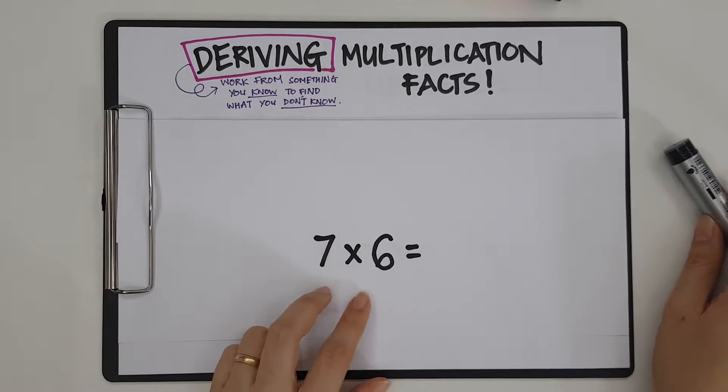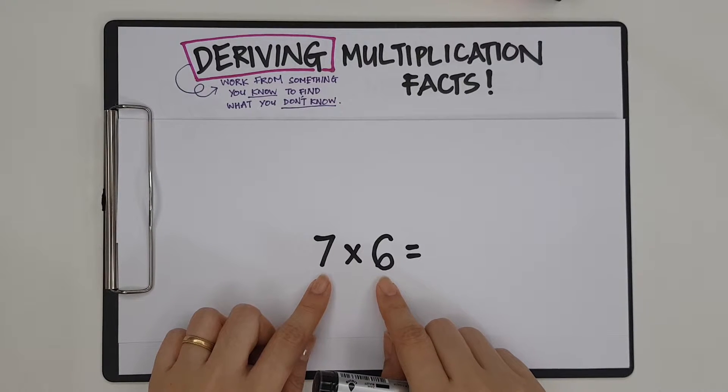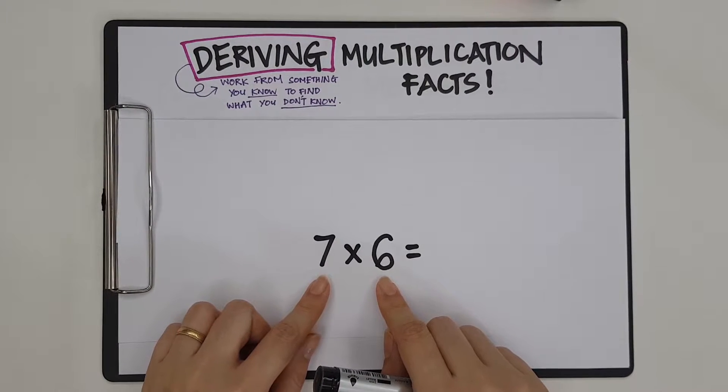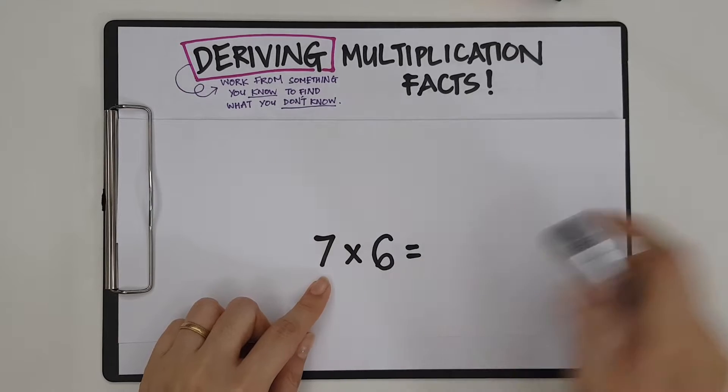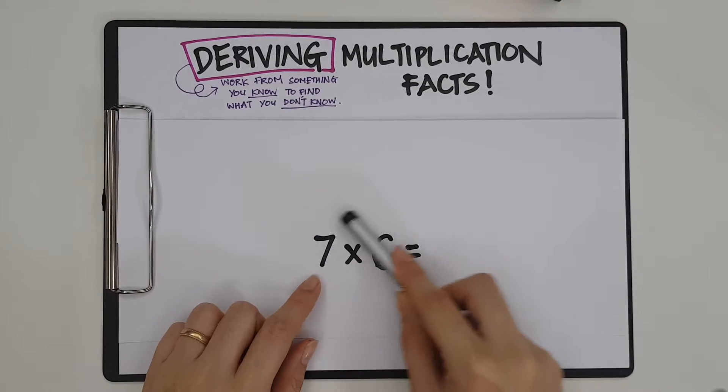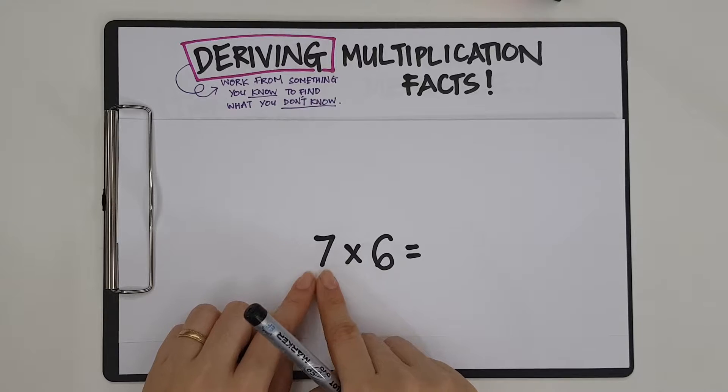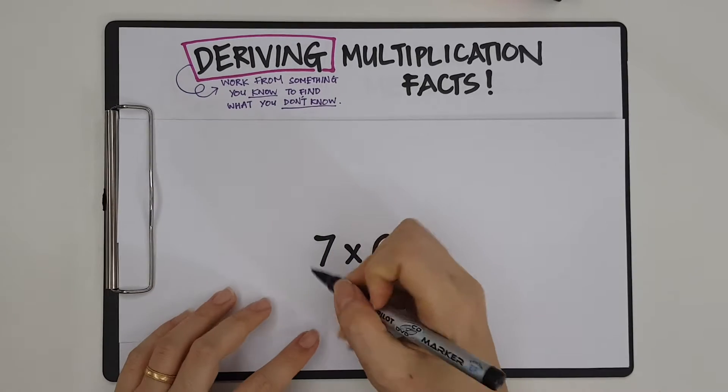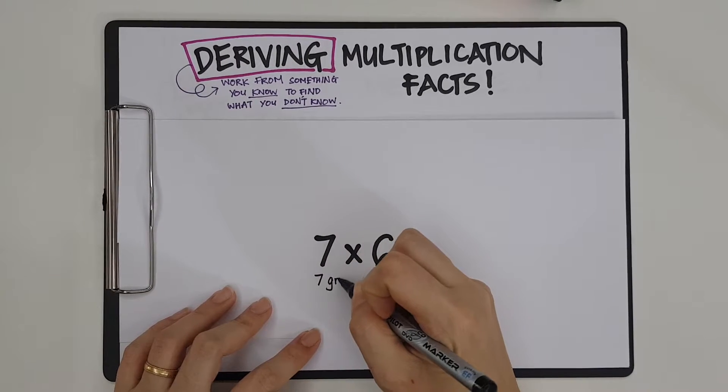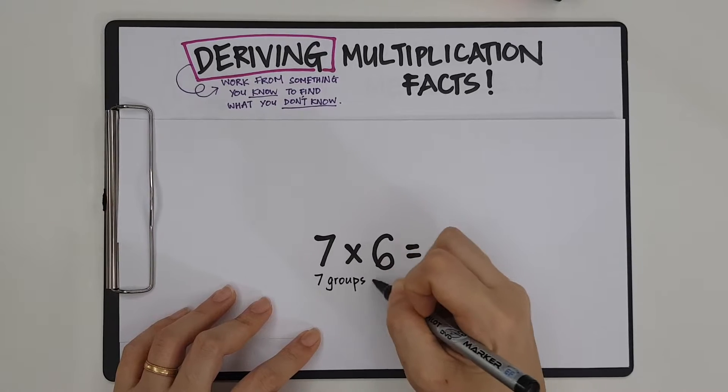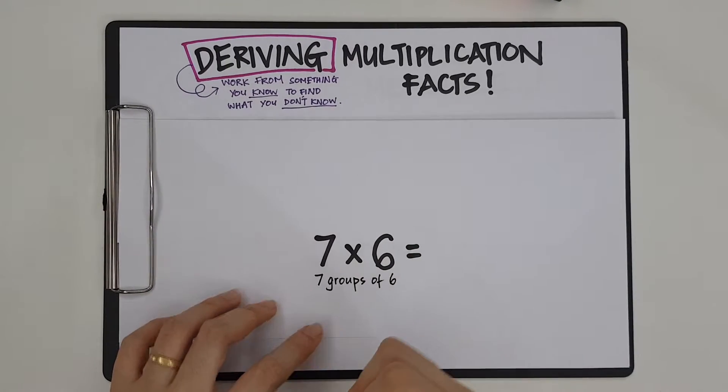So how do I find out what 7 times 6 is by working from something that I know? Okay, first of all, we need to be able to read this. And I'm going to read this as 7 groups of 6. Let me write that down.